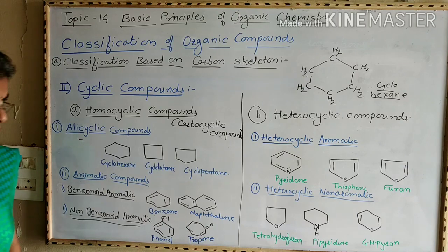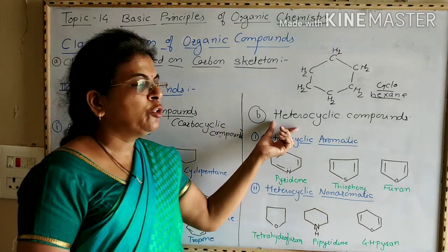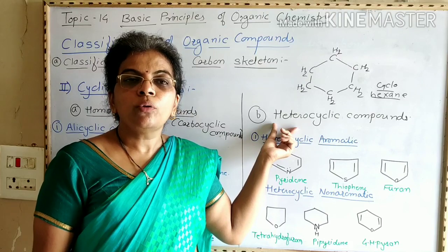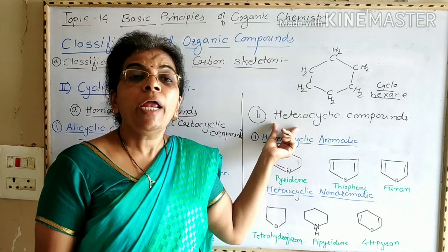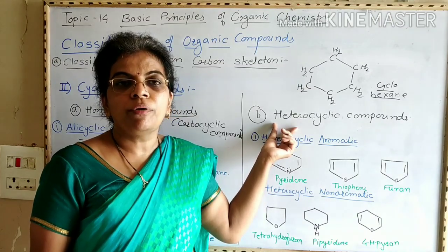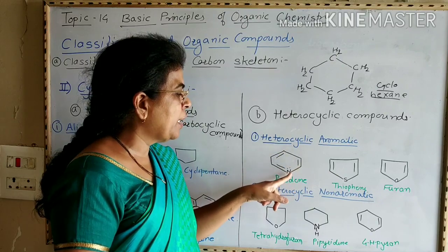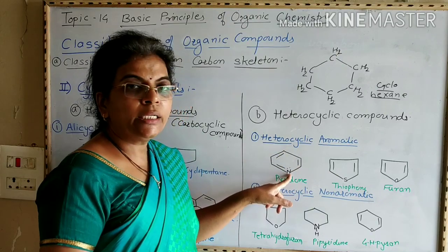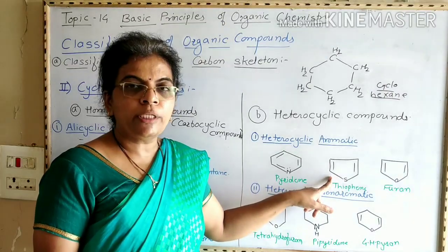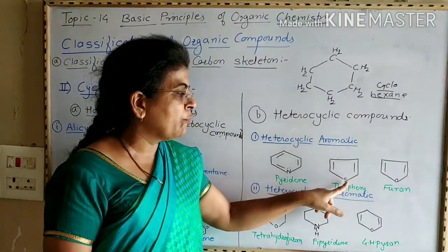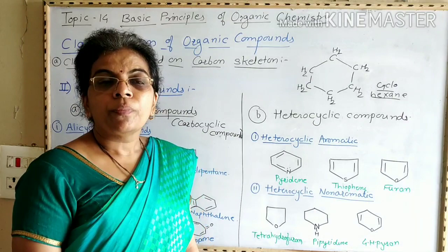Heterocyclic compounds are those in which ring formation is carried out by carbon atoms along with some heteroatom like nitrogen, oxygen, sulfur, etc. For example, pyridine — in ring formation along with five carbon atoms there is one nitrogen atom. This is an example of a heterocyclic compound. Thiophene — in ring formation, four carbon atoms along with one sulfur heteroatom take part in the ring formation. Therefore it is also an example of a heterocyclic compound.